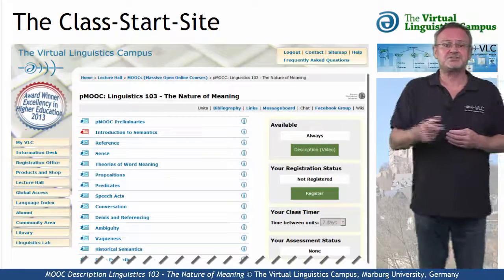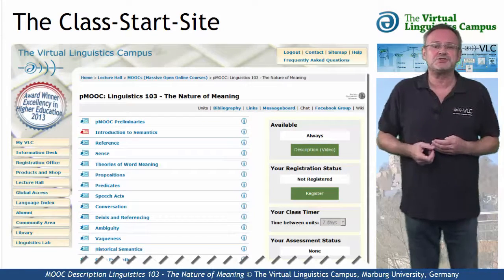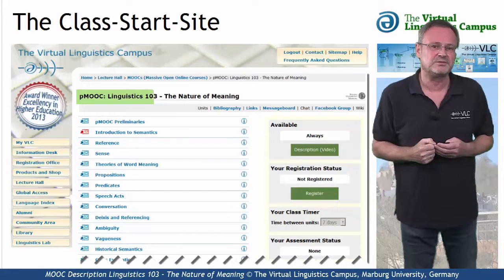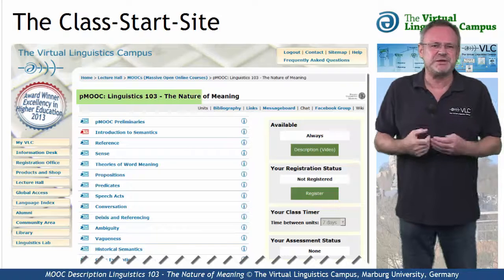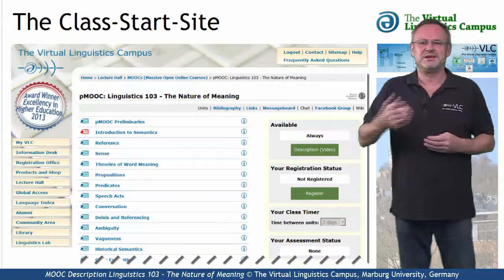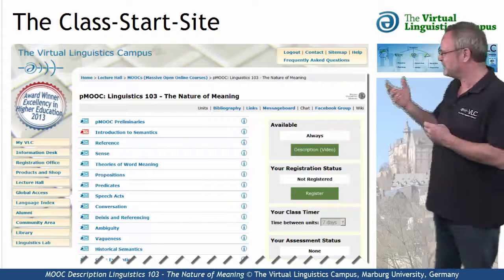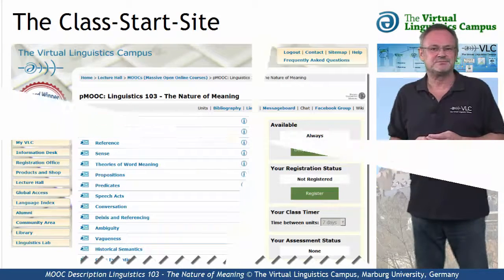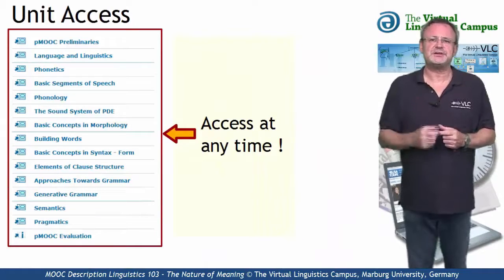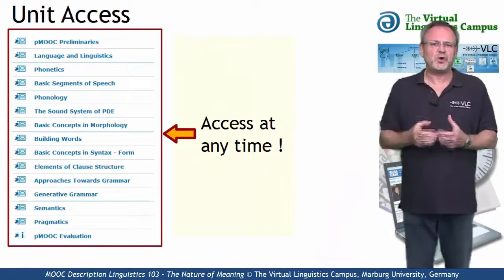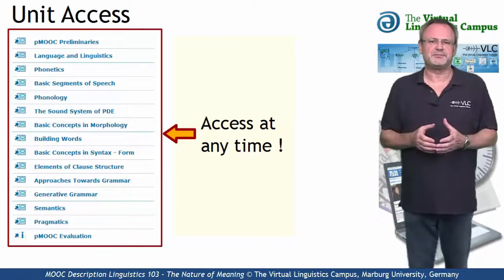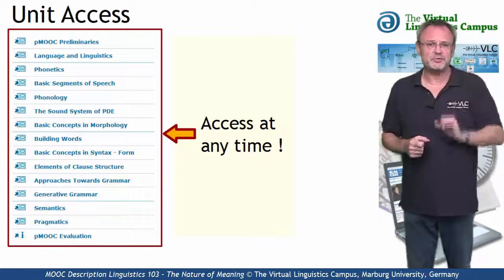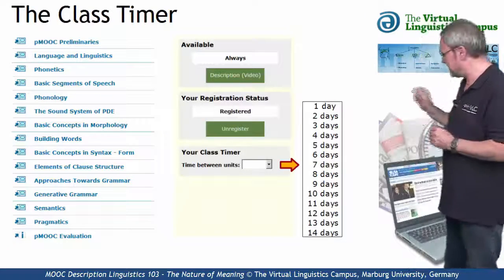Furthermore, and this is a novelty in the world of online courses, your class is a permanent MOOC — a PMOOC. But how does such a PMOOC work? Here are the central principles of using a VLC PMOOC. Central to our PMOOCs is the idea that you have access to all units of a class at any time. However, if you wish, you can also define your own fixed rhythm using the class timer.